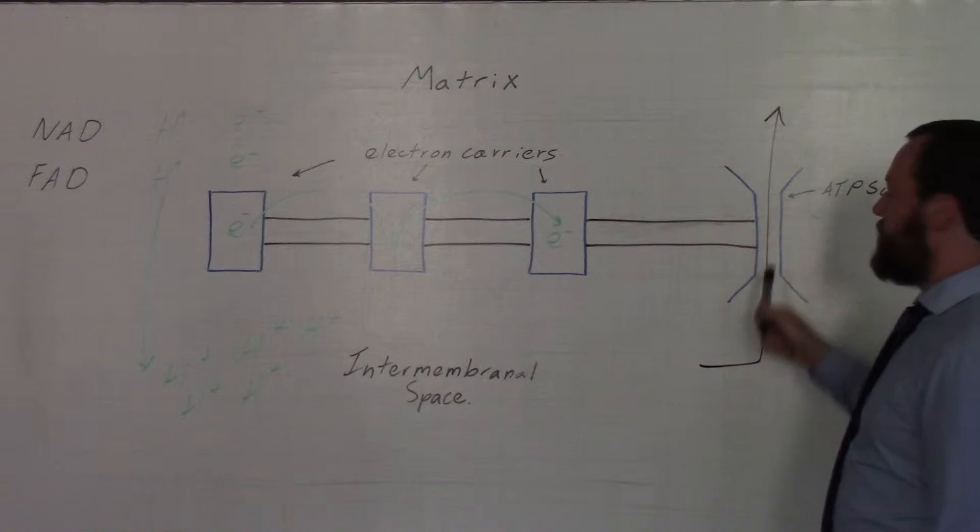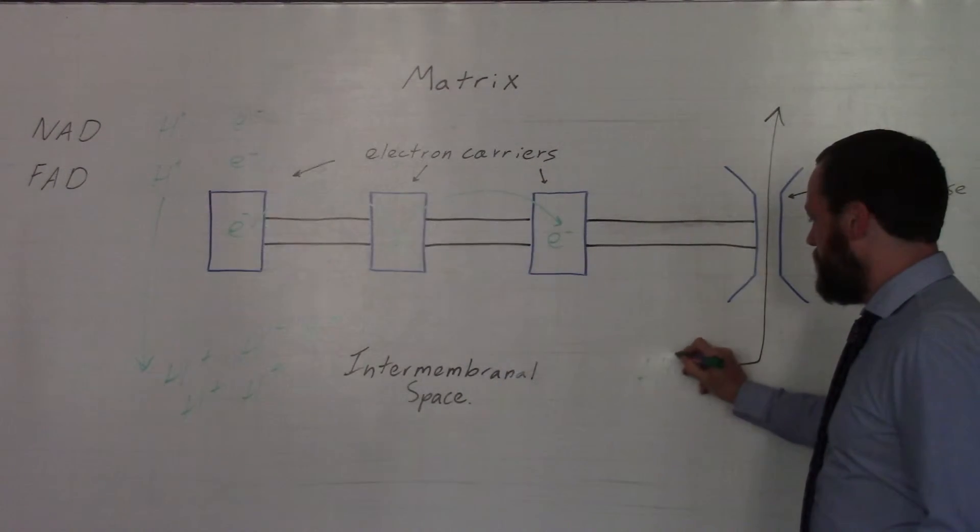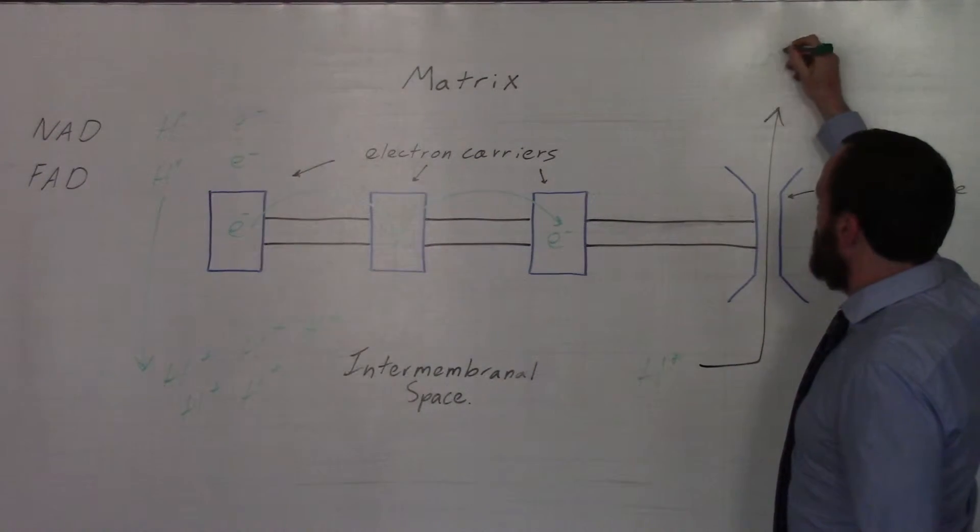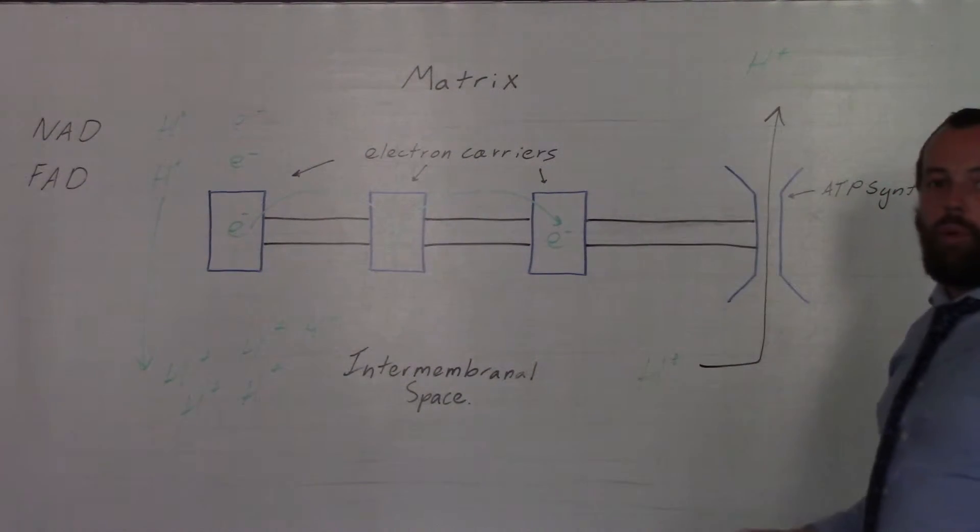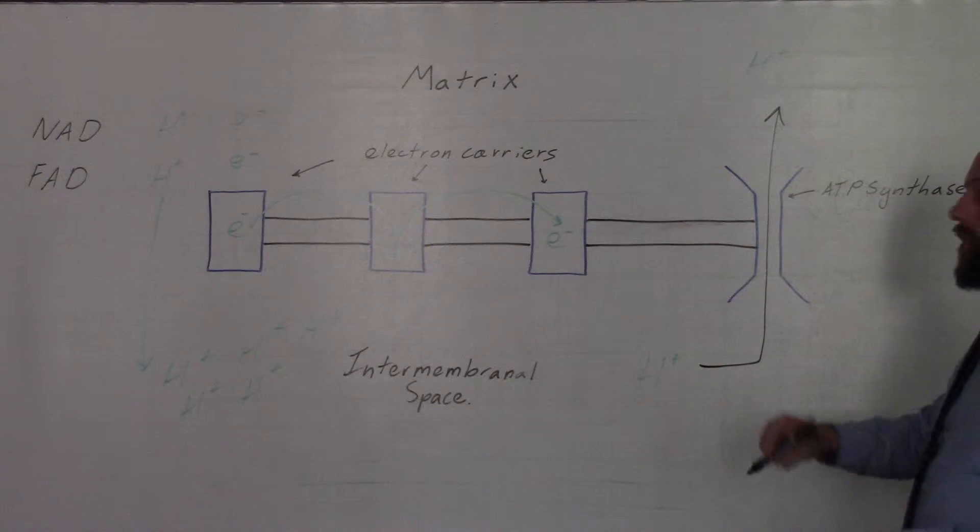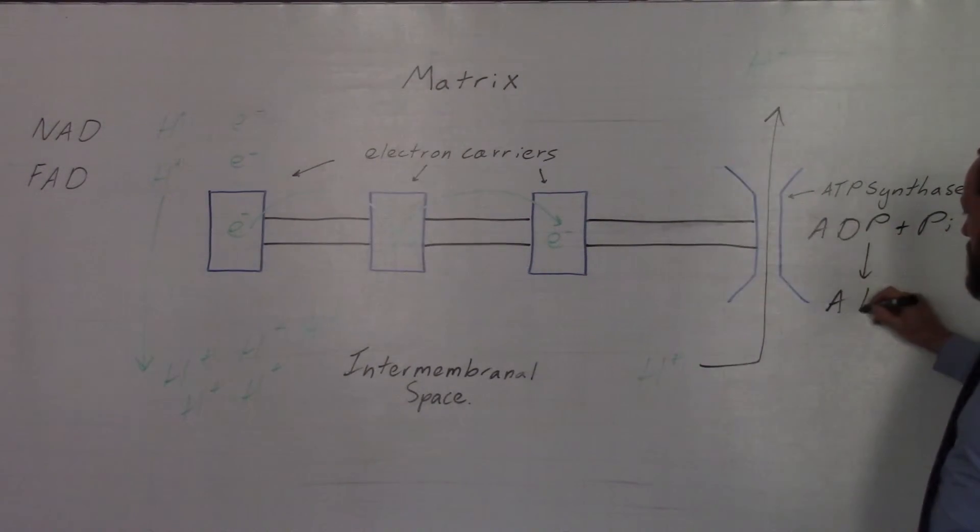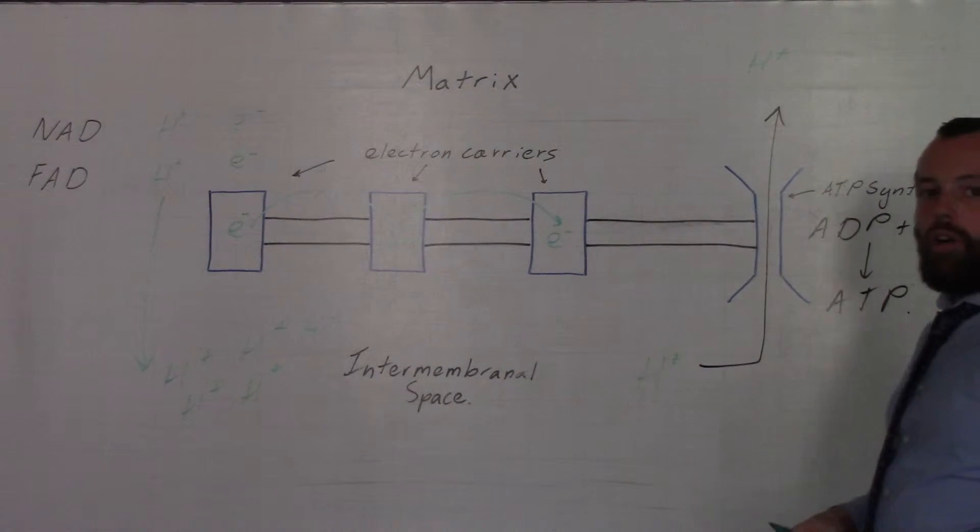They diffuse through ATP synthase, thereby following the concentration gradient. In doing so, this allows ATP synthase to join ADP and Pi together to form molecules of ATP.